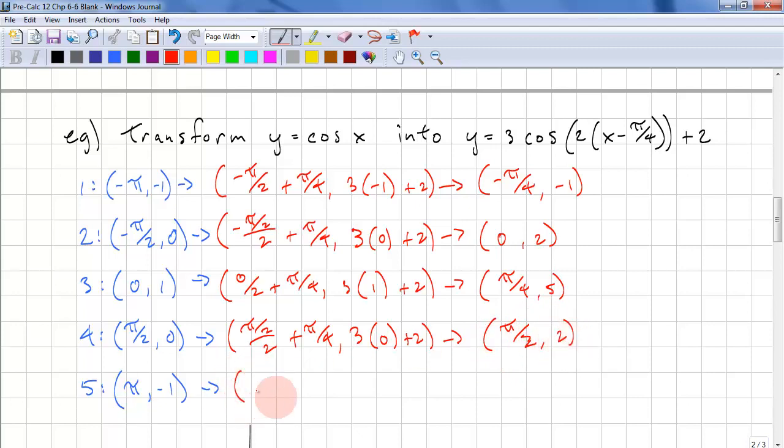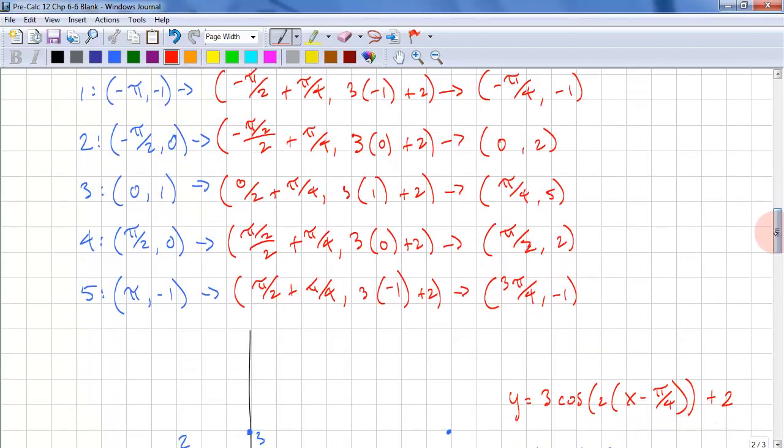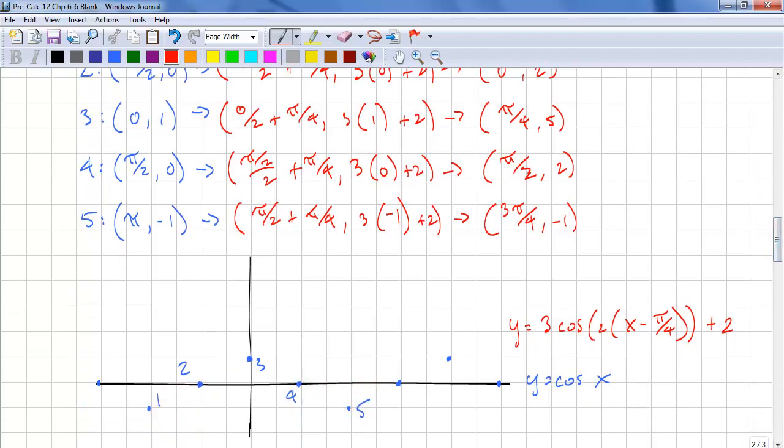Lastly, we have pi over 2 plus pi over 4, 3 times negative 1 plus 2. And that gives us 3 pi over 4 and negative 1. So here's our original points. First one is going to negative pi over 4, negative 1. That's there.